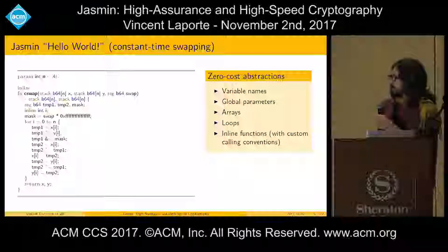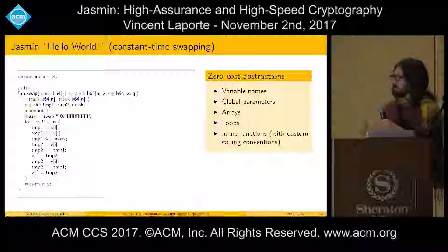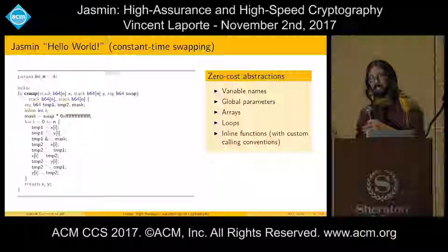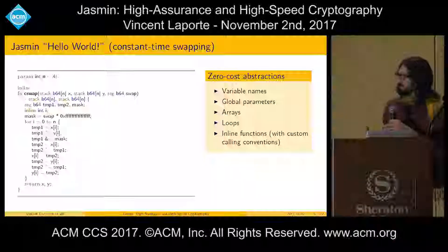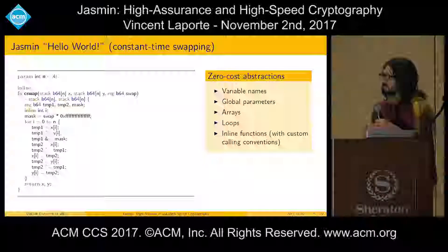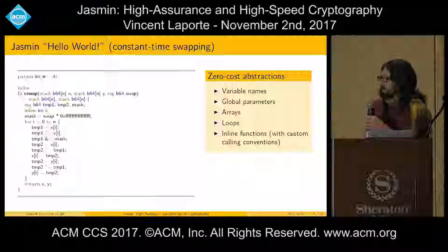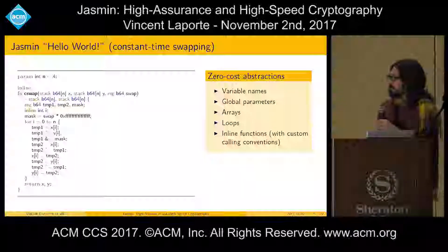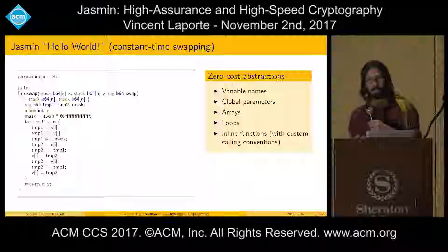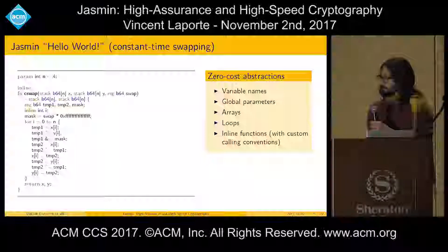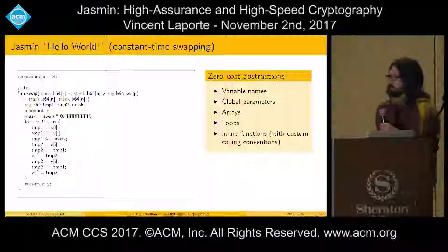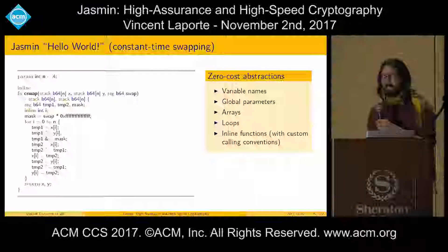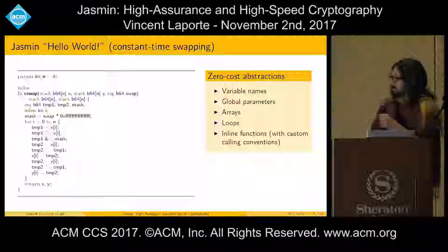Let's go through the code. This function will do something on every cell of the arrays, so there is a for loop for every such cell. It will first read the data from arrays x and y, do some bit-level manipulation, and then write back to x and y. Depending on the value of swap, it will write the same values or the values swapped. What we can see in this example is that even though each instruction in the source program corresponds to one instruction at the assembly level, the programmer can use convenient variable names, and there is a global parameter, which means we can write this function once for any size of the arrays.